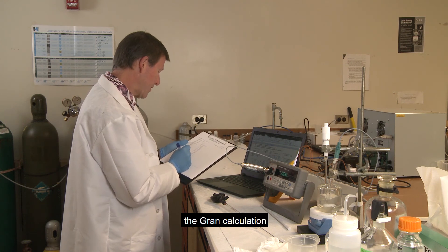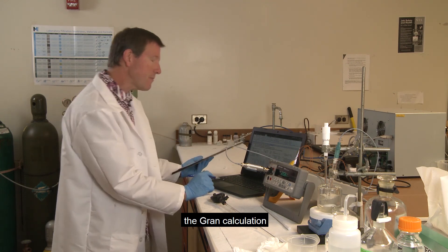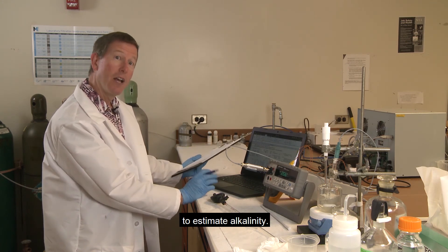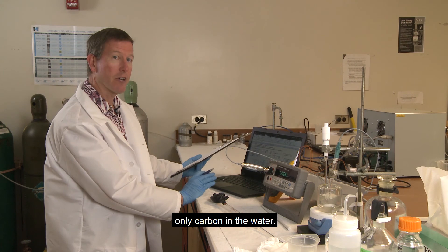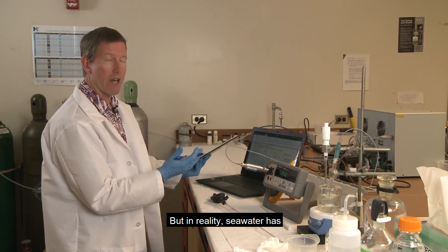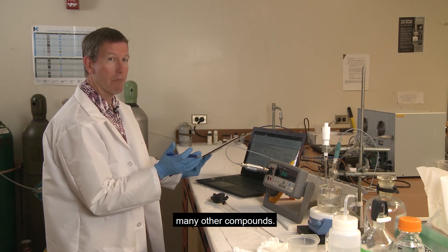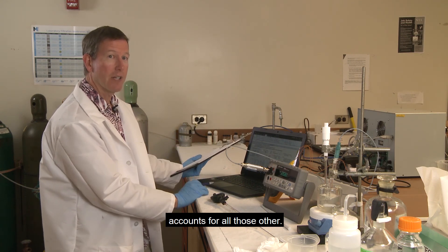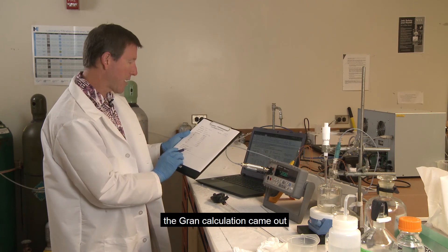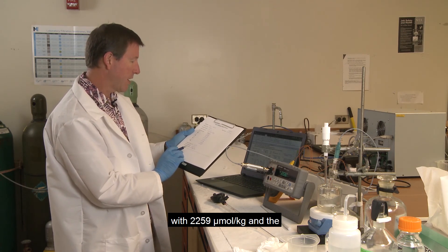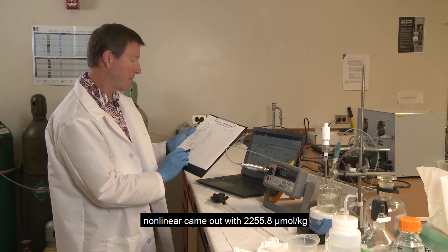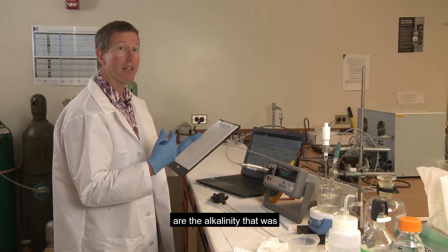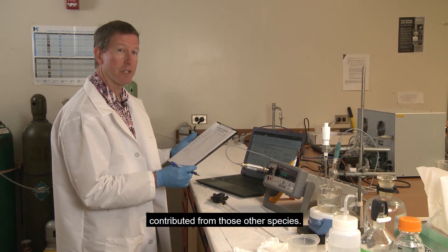So the difference is the grand calculation does a linearized function to estimate alkalinity just based on assuming that there's only carbon in the water. But in reality, seawater has many other compounds. So the nonlinear fit accounts for all those other. And you see the difference, the grand calculation came out with 2259. The nonlinear came out with 2255.8. The difference between those two are the alkalinity that was contributed from those other species.